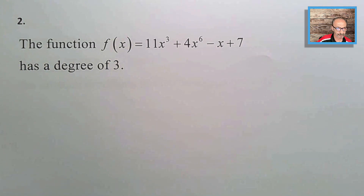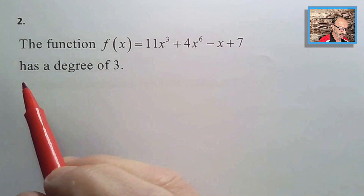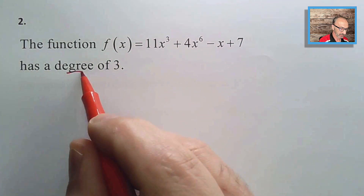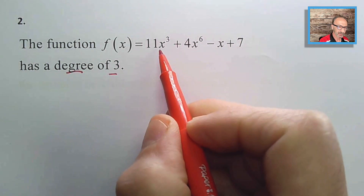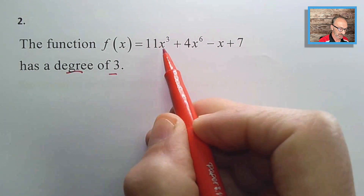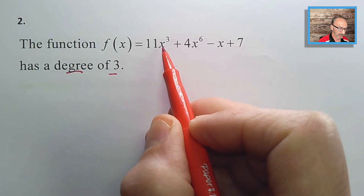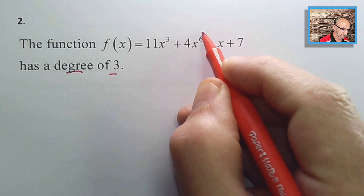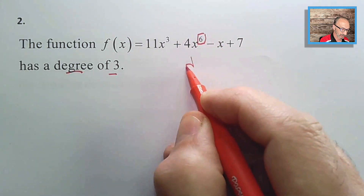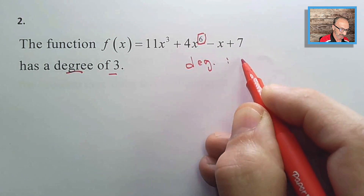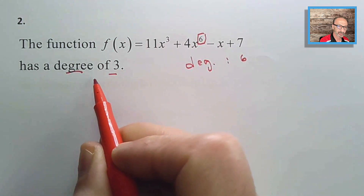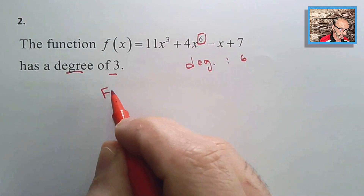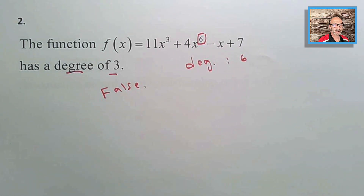Number two: the function f(x) as written has a degree of three — true or false? It could be misleading because if we write it in descending order, the leading term changes. The degree is actually six, not three. So again, it's a false statement.